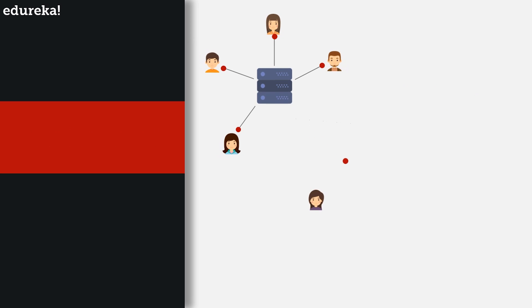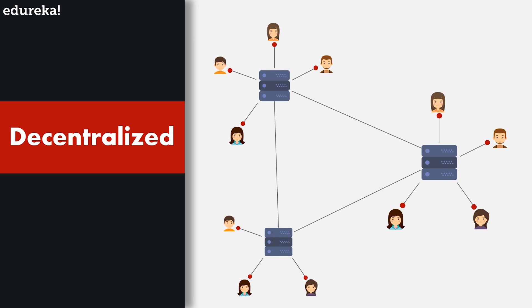A decentralized system is exactly the opposite — it is when a service is ruled by no single governing authority. You're using a decentralized system right now: the internet. Nobody really owns the internet, and nobody is really supervising what websites can or cannot do.